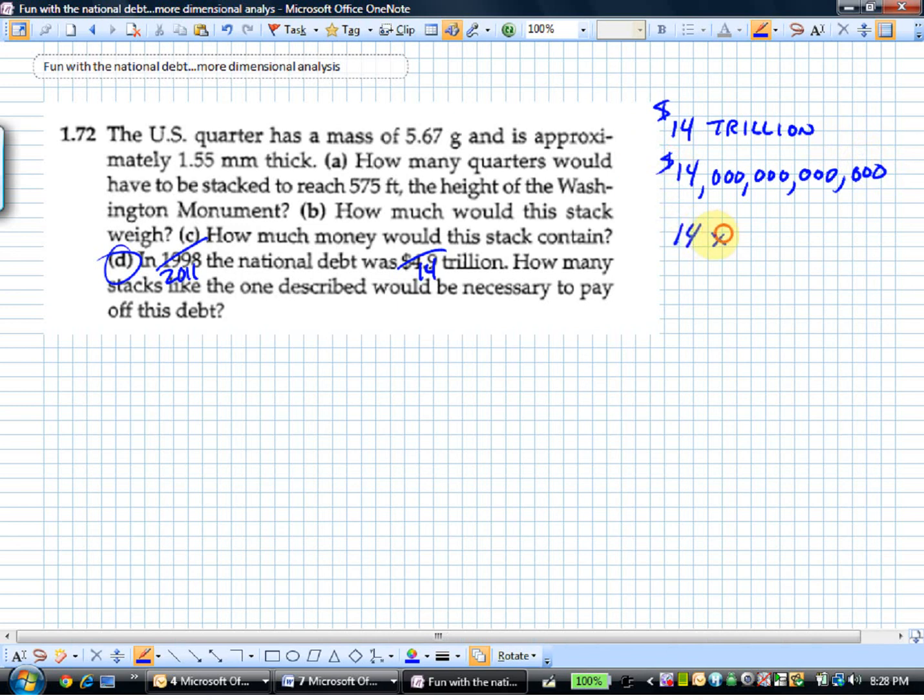If we wanted to write that in scientific notation, I hope everybody can do that. We'd write that as 14 times 10 to the 12th dollars, or if we wanted to be really official, 1.4 times 10 to the 13th dollars. That's to the nearest trillion dollars.